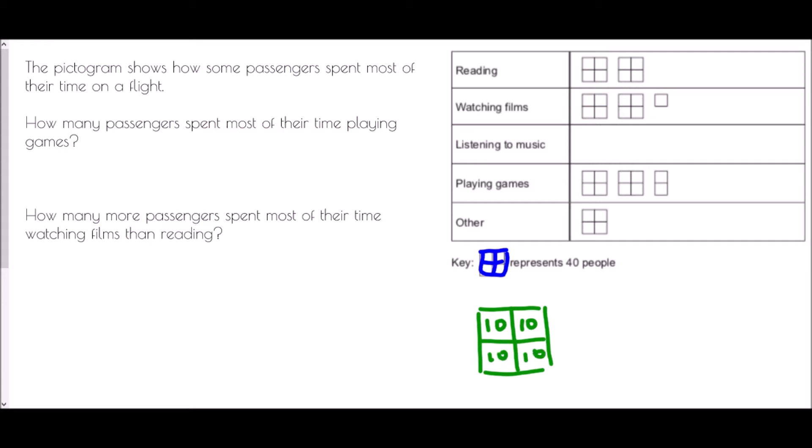So it asks how many passengers spent most of their time playing games? Well this is the section for playing games. We've got two full pieces so that is forty and that is forty, but then we've only got a half piece and a half piece would therefore be twenty. And so if I add all of those together, forty plus forty plus twenty, that means there were one hundred passengers who spent their time playing games.